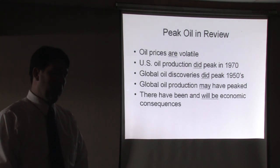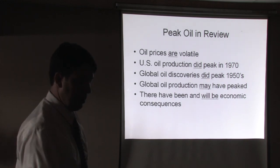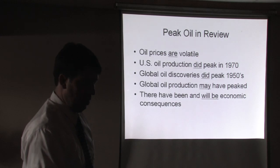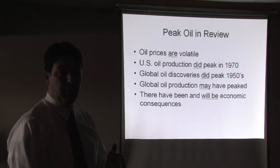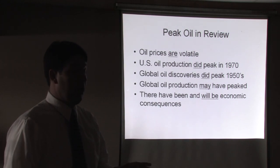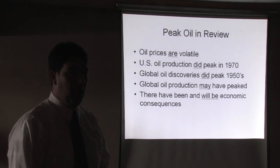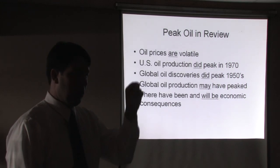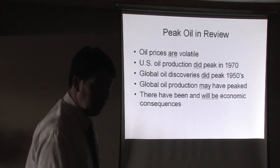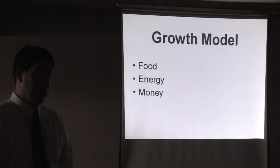So in review, oil prices are volatile. The U.S. oil did peak in 1970. Global discoveries peaked in the 50s. Global oil production probably peaked in June of last year because the prices were so high. Everyone was trying to get oil out. Everybody in the world that had a drill was trying to get the oil out. And they were able to get oil production up to almost 90 million barrels a day. But since then it's come down. That may have been the peak. It's hard to tell. And of course there are economic consequences any time oil supply changes.